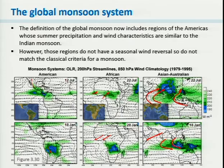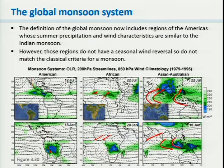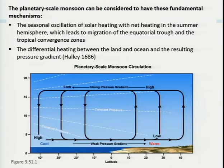There's also a newer addition to the monsoon system — the American monsoon — which doesn't satisfy all the criteria. It has a very strong seasonal cycle of rainfall with a very wet summer in both North and South America, but it doesn't have the wind reversals seen in the other monsoon regions, so you could say it's a quasi-monsoon. We can also see the wind reversals in the African monsoon region between summer and winter and in the Asian monsoon down into the Australian region in the southern hemisphere summer.